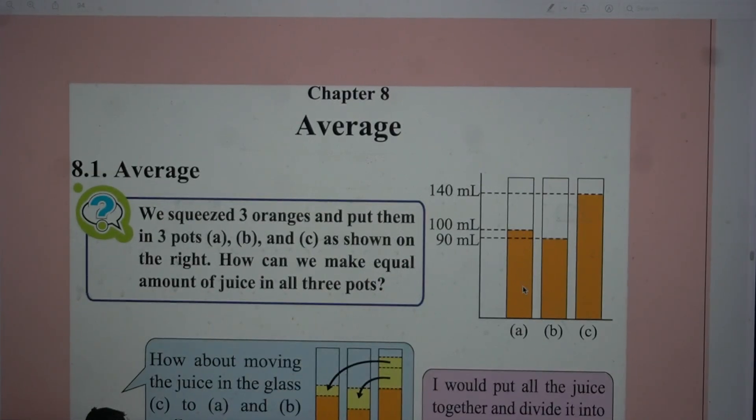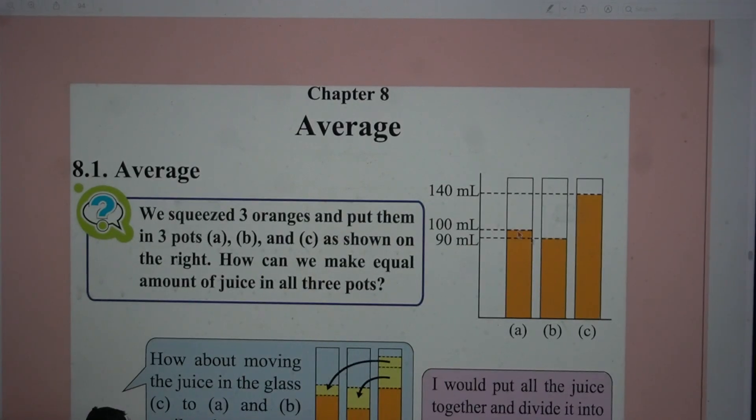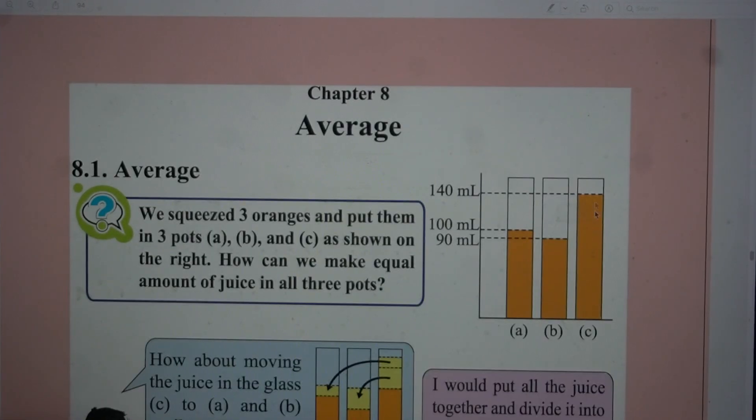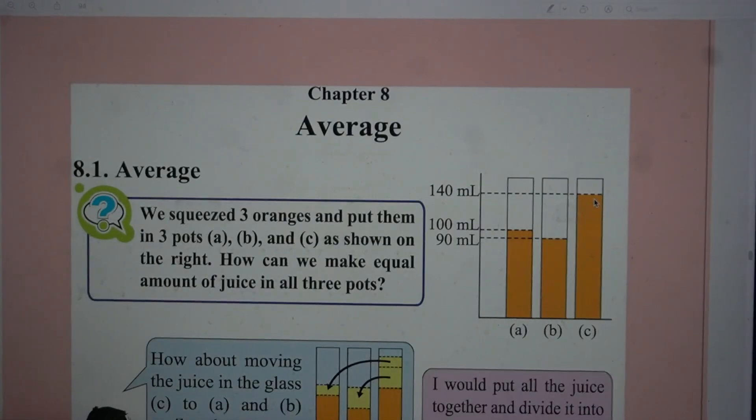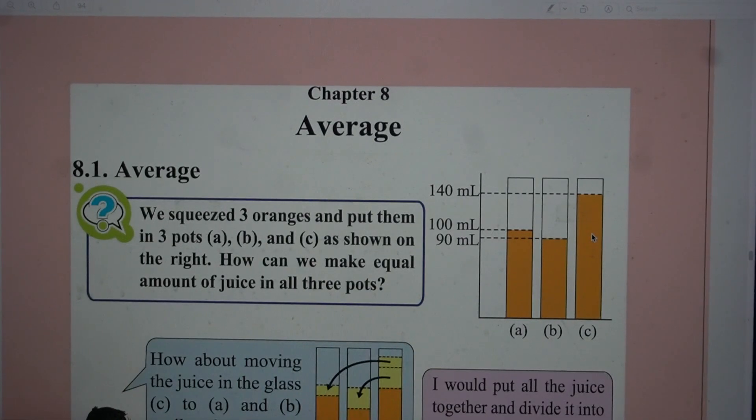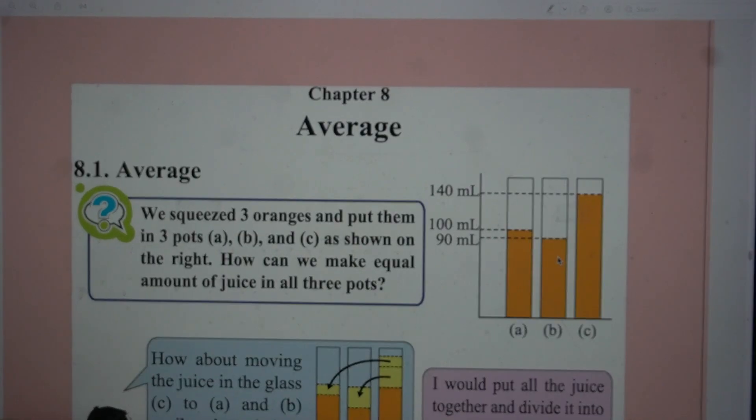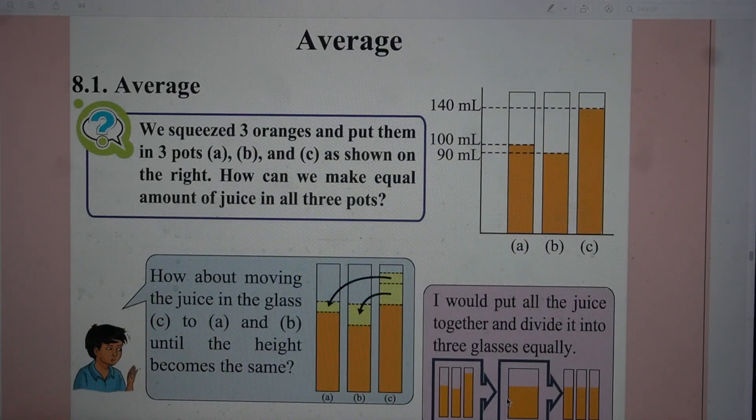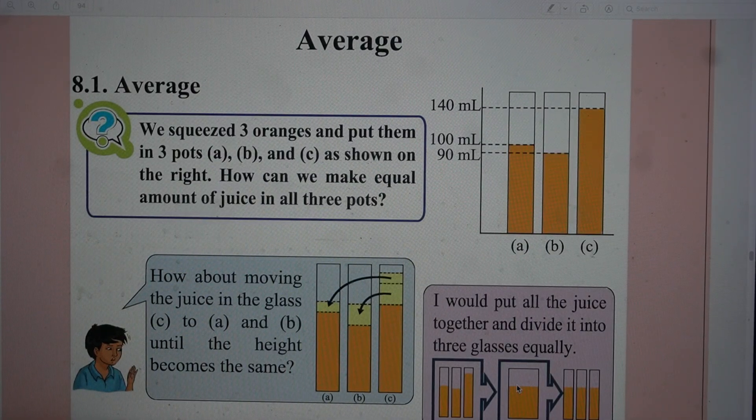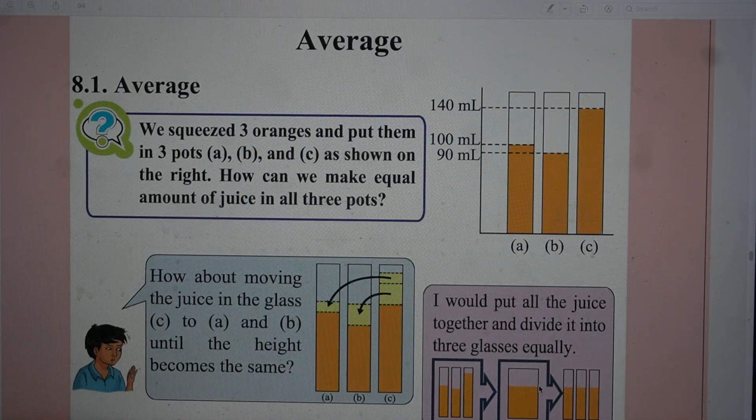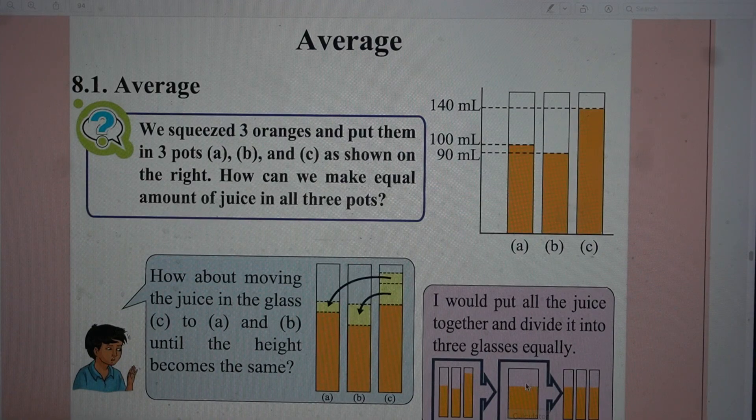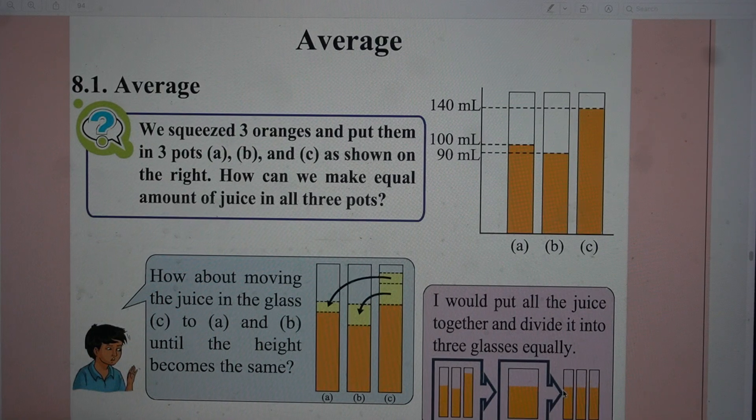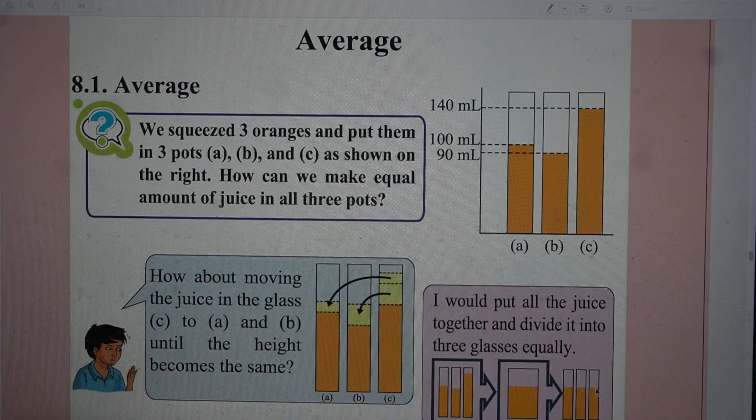In part A it is 100 ml, in B it is 90 ml, in C it is 140 ml. How to make them equal? There is a simple way to make them equal. First collect all the juice in one glass, one bigger glass.